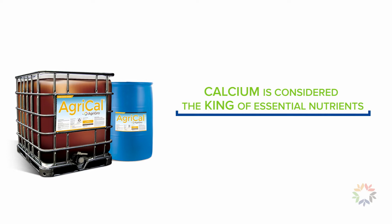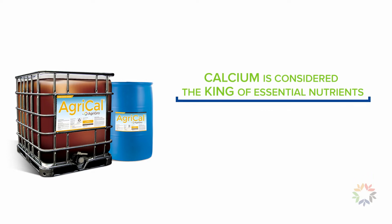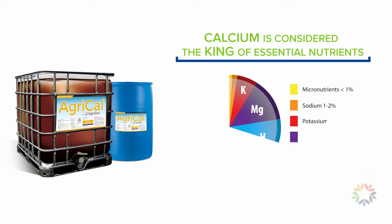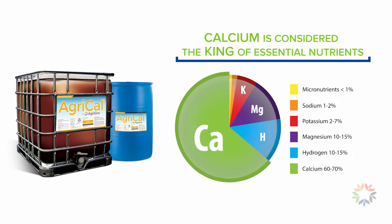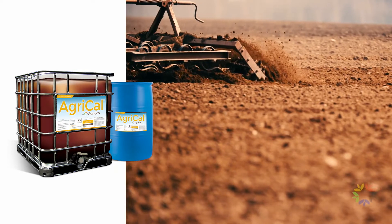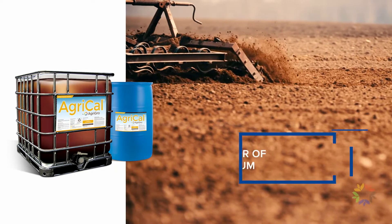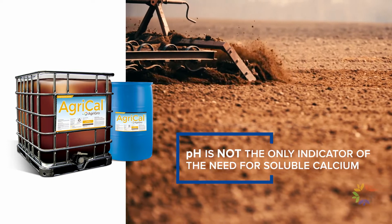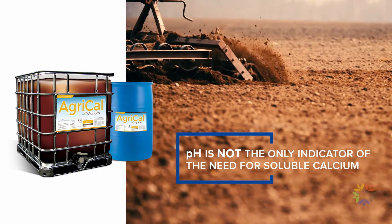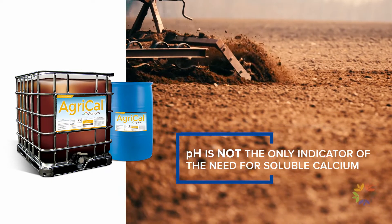Calcium is considered the king of essential nutrients and should make up between 60 to 70 percent of your soil's base saturation. But far too often, the pH reading of a soil test has overshadowed the importance of soluble calcium.